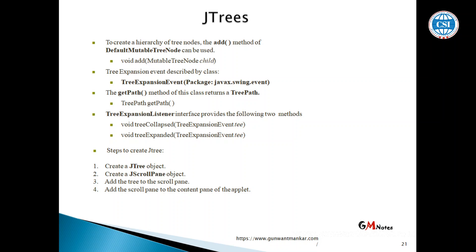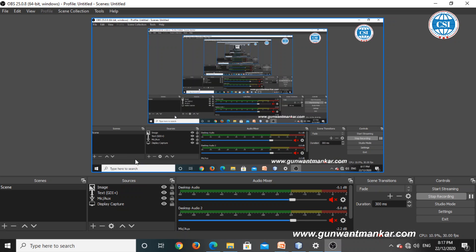How to create the JTree? First, you have to create the object of JTree. Then create the object of JScrollPane. Then add the JTree into the JScrollPane. Then add the JScrollPane into the content pane object. In this program, I am not going to use JScrollPane — I will show you the program without JScrollPane.